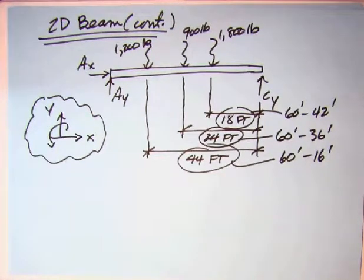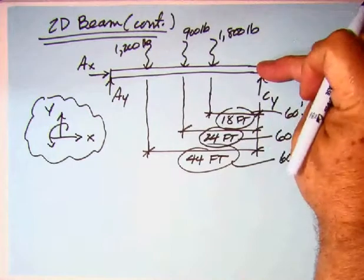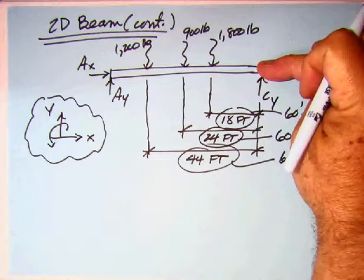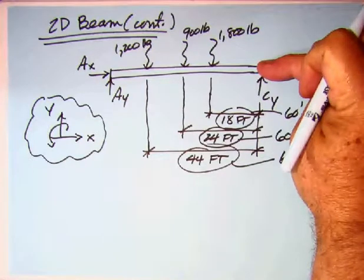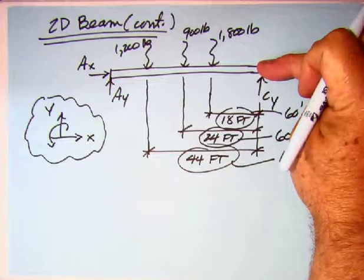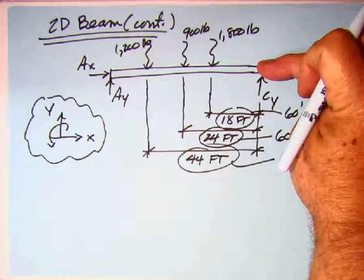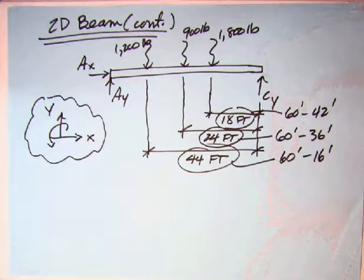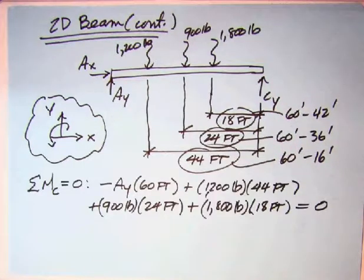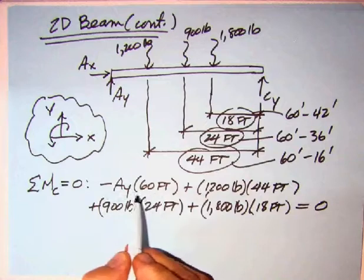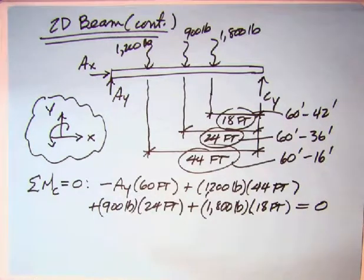Now I'm going to write out the moment about C. If you put your finger over here looking at counterclockwise, AY is negative. So we'll have a negative AY times 60. But then all the three forces, the 1,200, the 900, and 1,800, all now produce positive moments. Set that equal to zero. We end up with a negative moment for AY and then positive moments for each one of those. As I did with the previous problem, I do the algebra first, solving for A sub Y, and then I'll do the units and then the arithmetic.